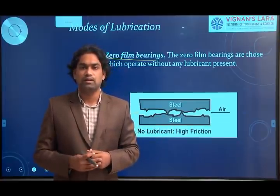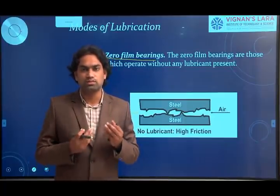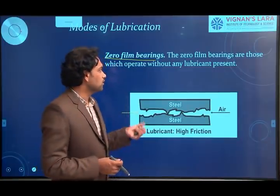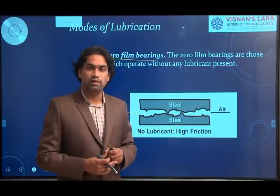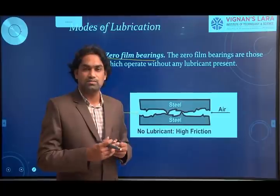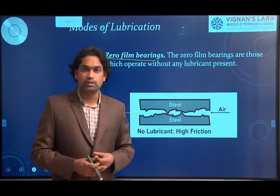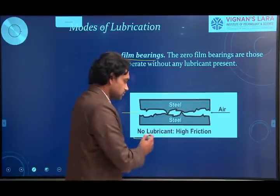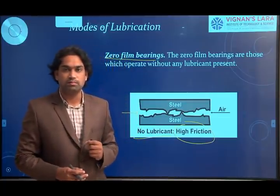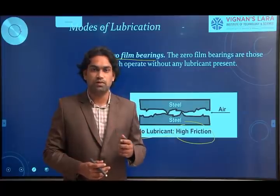For lubricating oils, mineral oils or synthetic oils can be used. For zero film lubrication, carbon or graphite can be used. Research is also ongoing to develop different bearing materials to reduce friction and wear conditions without providing a proper layer of lubricant between the two surfaces. With zero film, there is obviously a high amount of friction between the two surfaces.